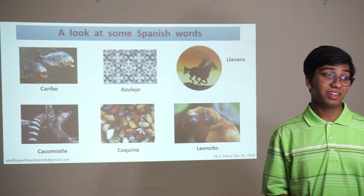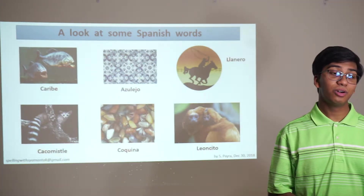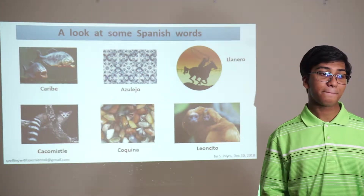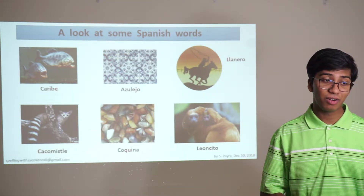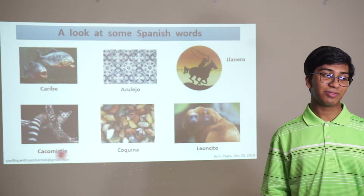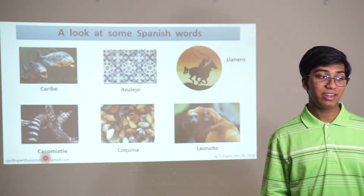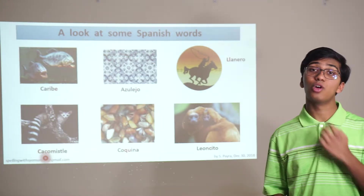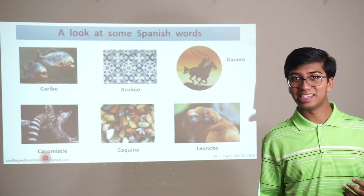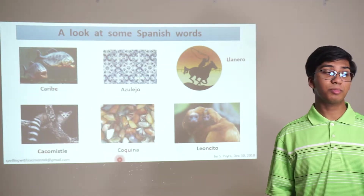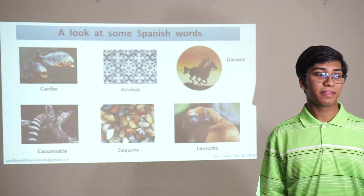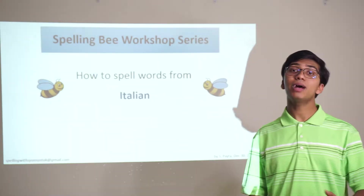Caribe is a piranha. Azulejo is a blue tile made in Spain and Portugal — it comes from azul meaning blue. You have a lanero, a cacavistle — it looks Greek because of the caco which usually means bad, but this is actually from Nahuatl roots, so it's a kind of false cognate. Coquina is a small marine clam. And leoncito is a lion monkey. So that about wraps it up for Spanish.